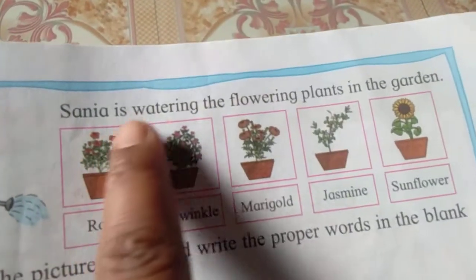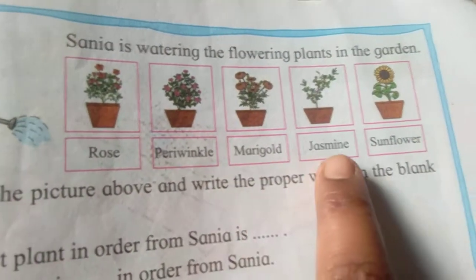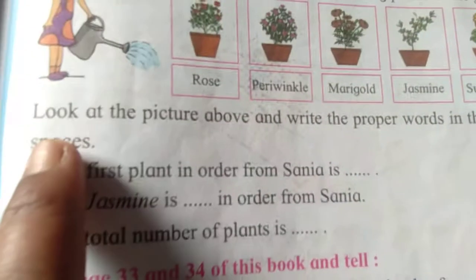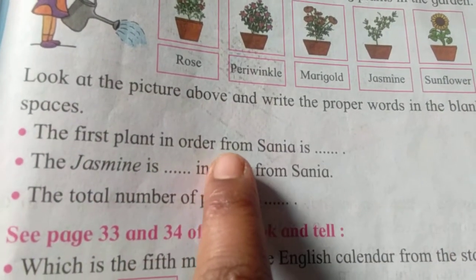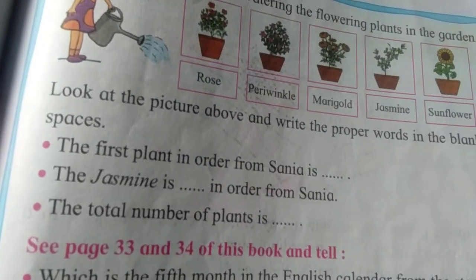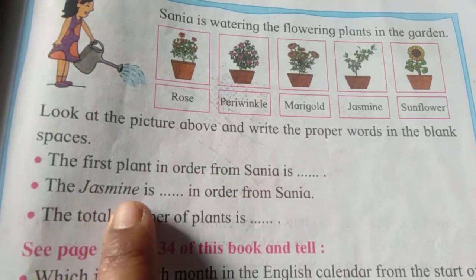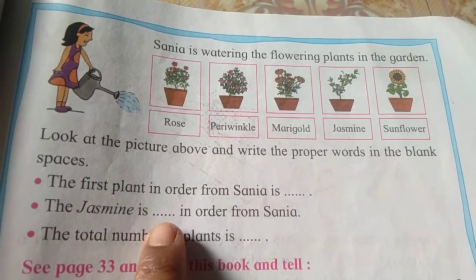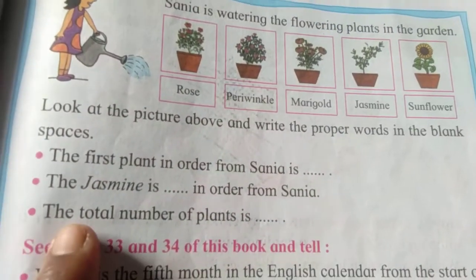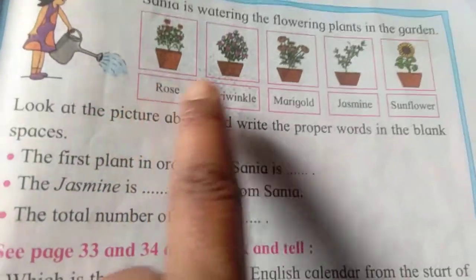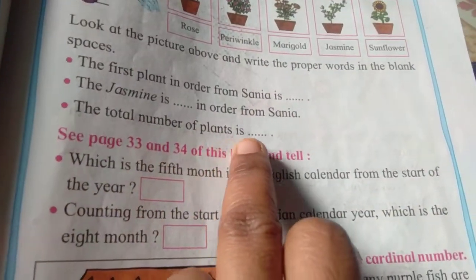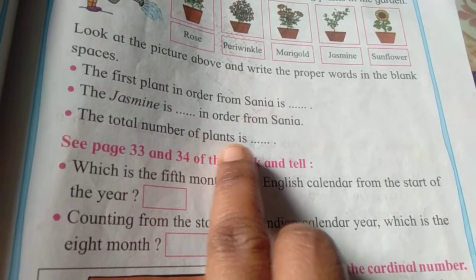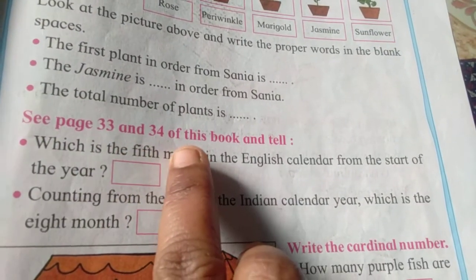Look here — Sania is watering the flower plants in the garden: rose, prickling, marigold, jasmine, and sunflower. Look at the pictures above and write the proper words in the blank spaces. The first plant in order from Sania is rose. The jasmine is the fourth in order from Sania. The total number of plants is five.